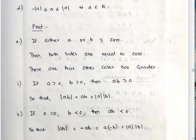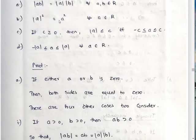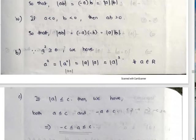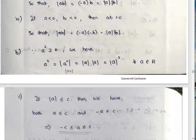The second statement: mod A squared equals A squared. We can write mod A squared equals mod A into mod A, which by the first result equals mod of A times A, equals mod of A squared, which equals A squared.